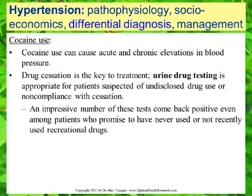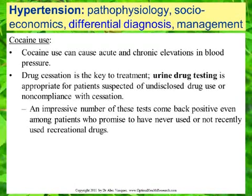Our next consideration in the differential diagnosis of hypertension is cocaine use. Cocaine can cause acute and chronic elevations in blood pressure. Drug cessation is the key to treatment, and urine drug testing is appropriate for patients suspected of having recent or undisclosed drug use. An impressive number of these tests come back positive even on patients who claim not to have recently used recreational drugs. Whether we're dealing with patients of higher or lower socioeconomic status, we need to consider illicit drug use — cocaine specifically is the most notorious for contributing to hypertension.